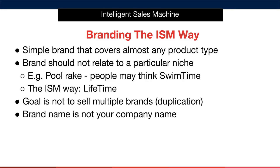To give you a very simple example of how this might look, let's go back to our pool rake example that we've used in the program. The way most people will tell you to do this would be to create a brand called Swim Time. The thinking behind it makes sense — brand something and relate it back to that niche in some way. In our model, we are focusing on creating rule of five profit centres that will pay us passively. We are not focused on creating a brand that you plan to sell for millions in the future, because we're creating a lifestyle business. So the intelligent sales machine way of creating a brand that would work for this pool rake would be to call that brand Lifetime.